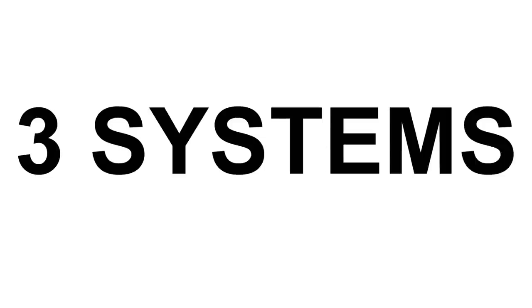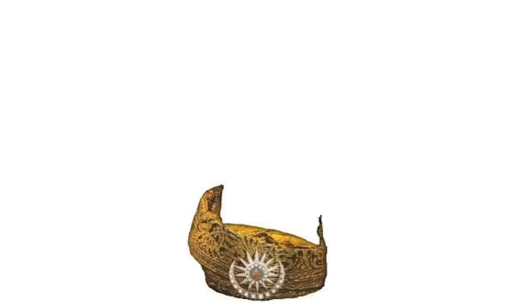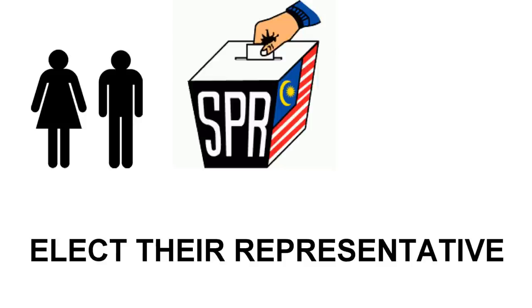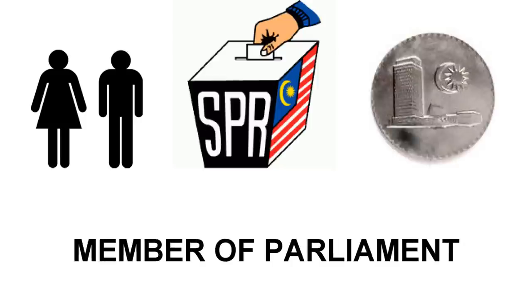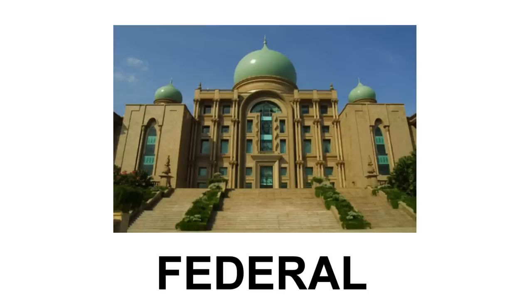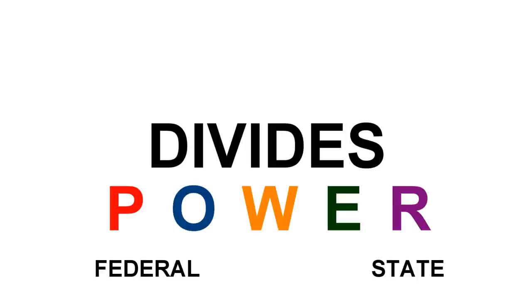In sum, there are three political systems practiced in Malaysia. The first one is constitutional monarchy, where we have a monarch ruling the country but his power is determined by the federal constitution. Second, we have parliamentary democracy, where the people elect their own representatives to the parliament, and these members of parliament become part of the cabinet. And the last one, we have the federation, which is the system that divides the power between the federal government and the state government. That's it.